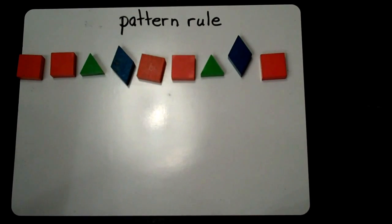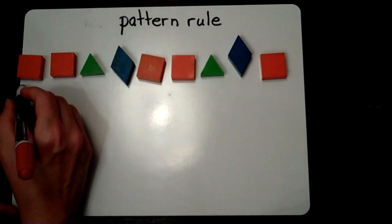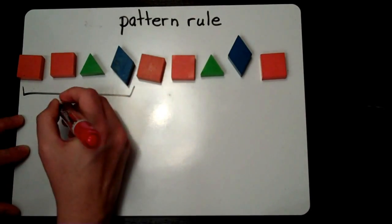I've noticed the smallest part that repeats is orange, orange, green, blue. This is my pattern core.